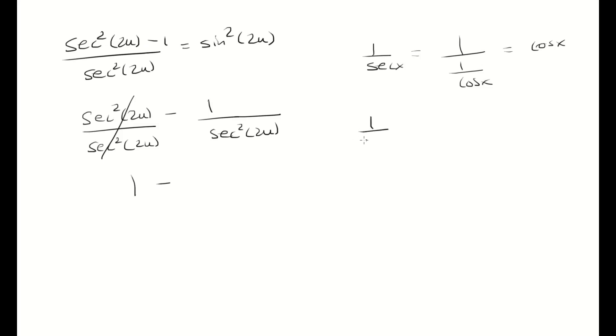So, 1 over secant squared is 1 over 1 over cosine squared, which is cosine squared. And then 1 over secant squared 2u is 1 over 1 over cosine squared 2u, which is cosine squared 2u.